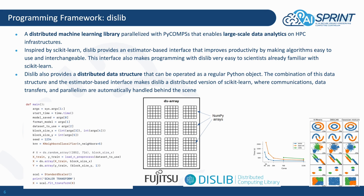Dislib is a distributed machine learning library built on top of PyCOMPS, benefiting from the parallelization mechanisms of the COMPs runtime. It enables large-scale data analytics on HPC infrastructure, and more generally on the computing continuum. Dislib is inspired by scikit-learn and provides the same estimator-based interface, which improves productivity by making algorithms easy to use and interchangeable. This interface makes programming with dislib easy for developers and scientists already familiar with scikit-learn. The code follows the same structure as a scikit-learn application, and it is easy to change the type of algorithm — classification, clustering, etc.